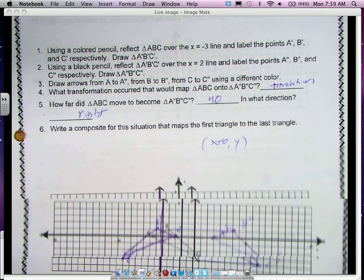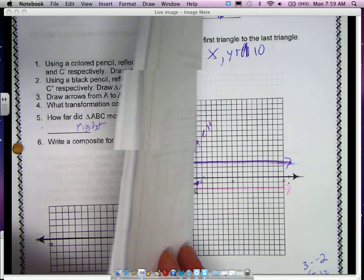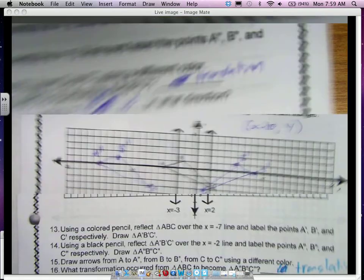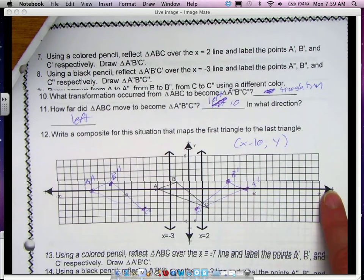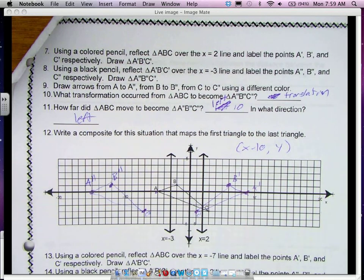Alright, let's look at the next page. This one we did the same thing except we did it in a different order. First we did x equals 2, and then we did x equals negative 3. We found that it was a translation. It was 10 units again, but this time it was to the left. So it's x minus 10 comma y.